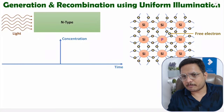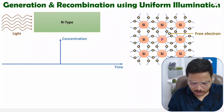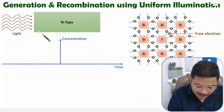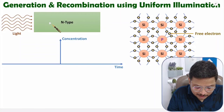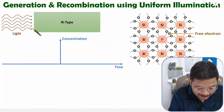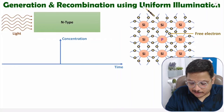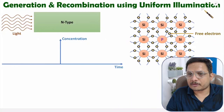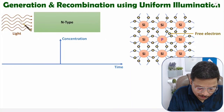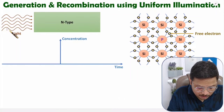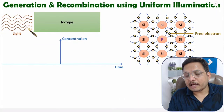Let me take one example. Here we have an n-type semiconductor material. We are falling light on it uniformly — this is what uniform illumination. So uniform light that we fall on this material will cause a process of generation.